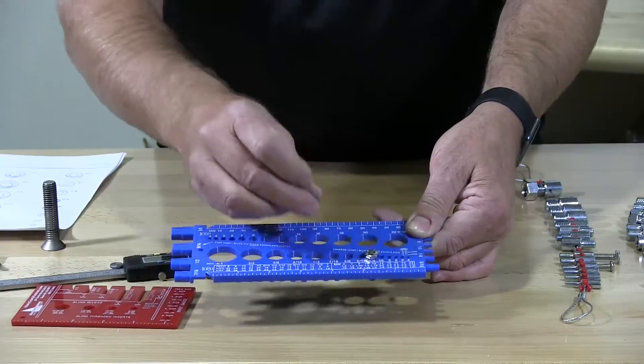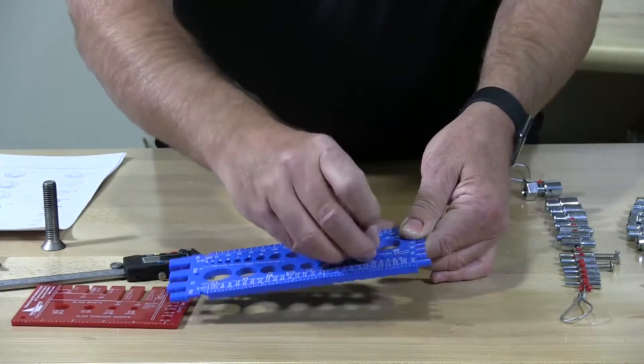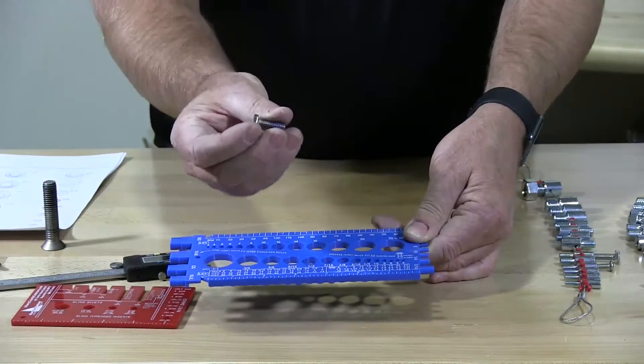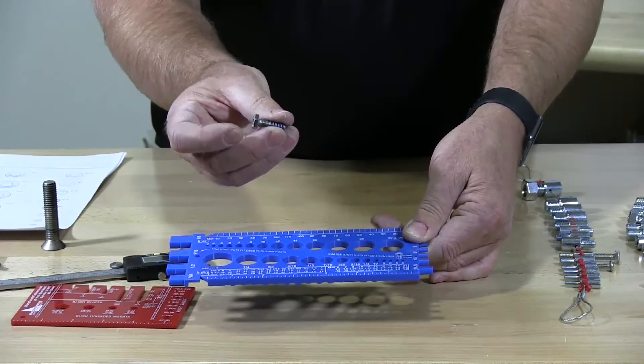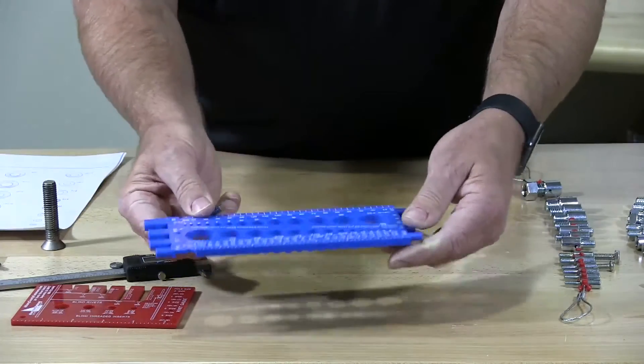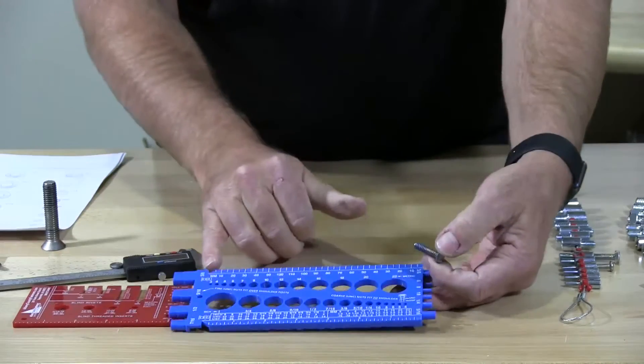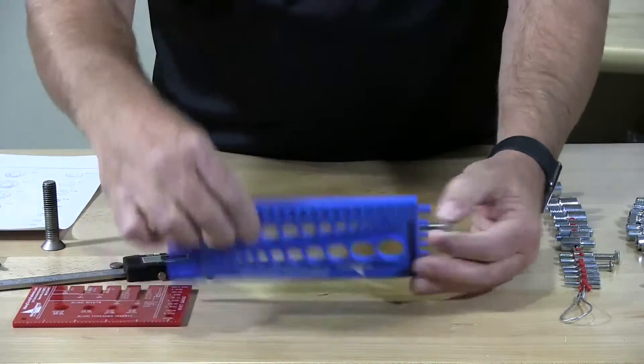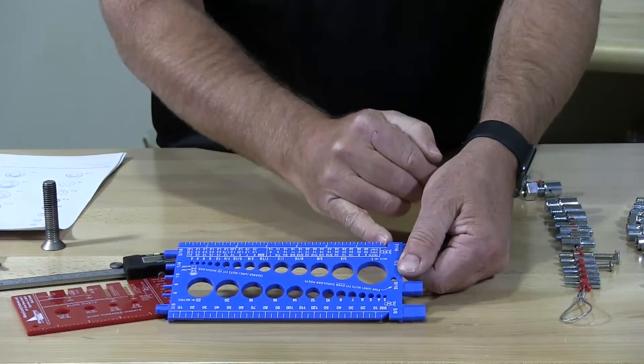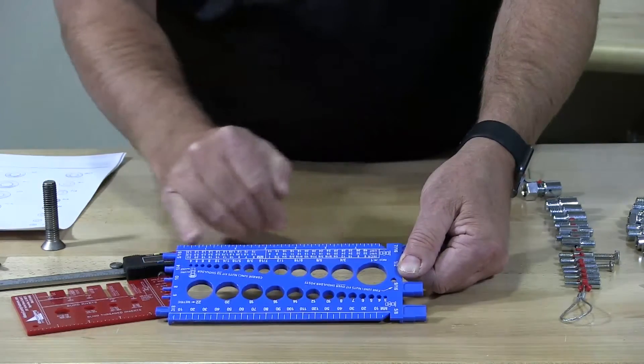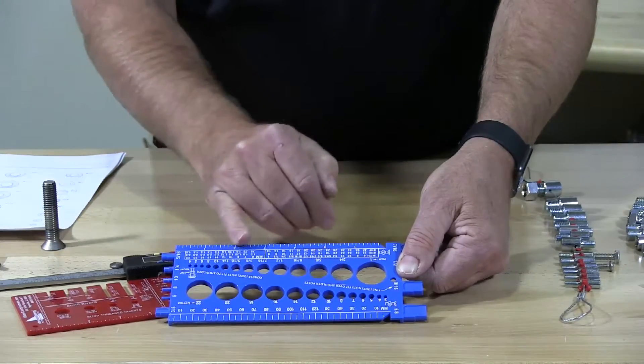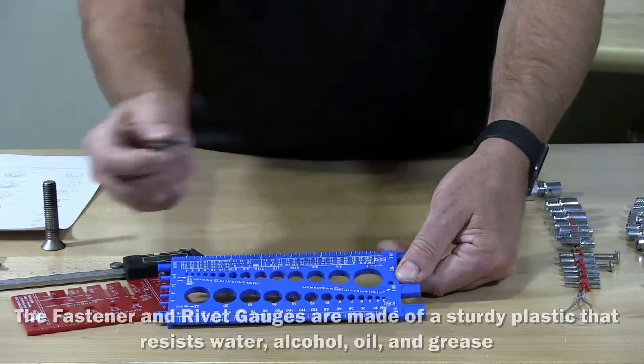So we know that it's a quarter and then to measure the length because hex cap screws are measured from under the head. So we would measure it from this side. This has two measuring points. I'm sorry it would be this side. We have two measuring points. This little angle cut in here is made for a flat head and this side is made for the length. From under the head.